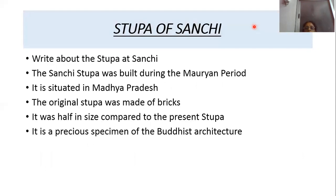The next topic is the Stupa of Sanchi. Write the question: write about the Stupa of Sanchi. The Stupa of Sanchi was also built during the Mauryan period, during the time of King Ashoka. It is situated in Madhya Pradesh. The original Stupa was made of bricks and was half its present size; later its area was doubled. It is the best example of Buddhist architecture.